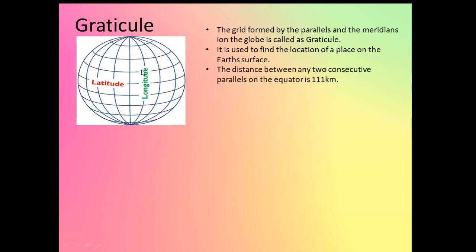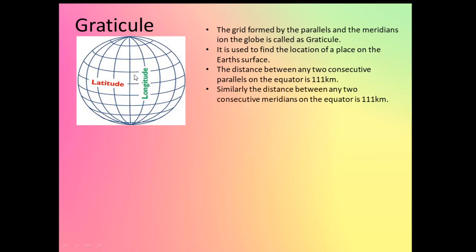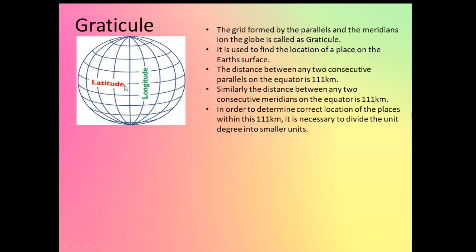The distance between any two consecutive parallels on the equator is 111 kilometers. Similarly, the distance between any two consecutive meridians on the equator is also 111 kilometers — both the parallels and meridians at the equator have the same distance of 111 kilometers. In order to determine the location of a place within this 111 kilometers or any other areas on the globe, sometimes to get the appropriate measure, this degree is divided into smaller units. Degrees are further divided into minutes, and minutes are divided into seconds.